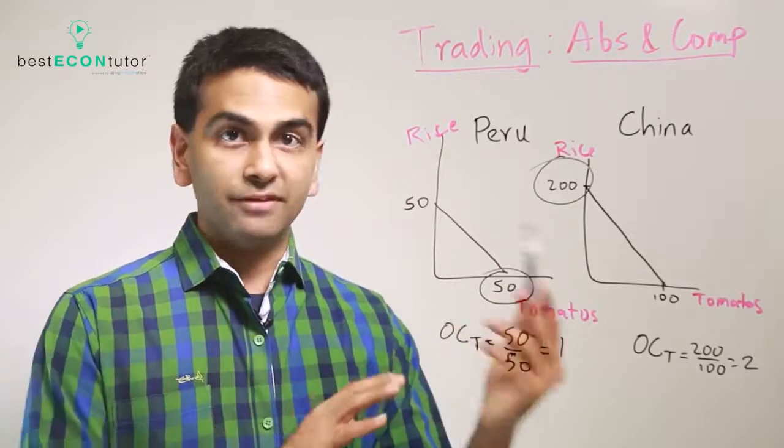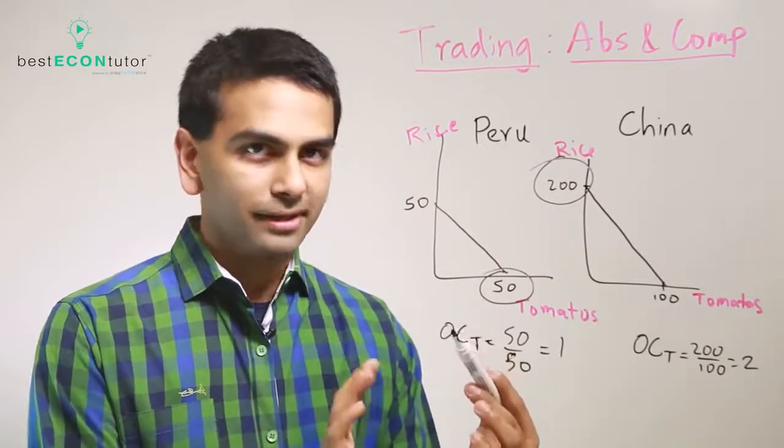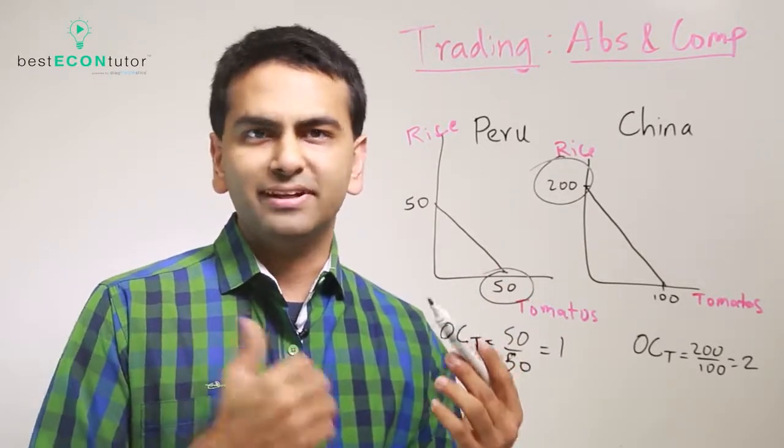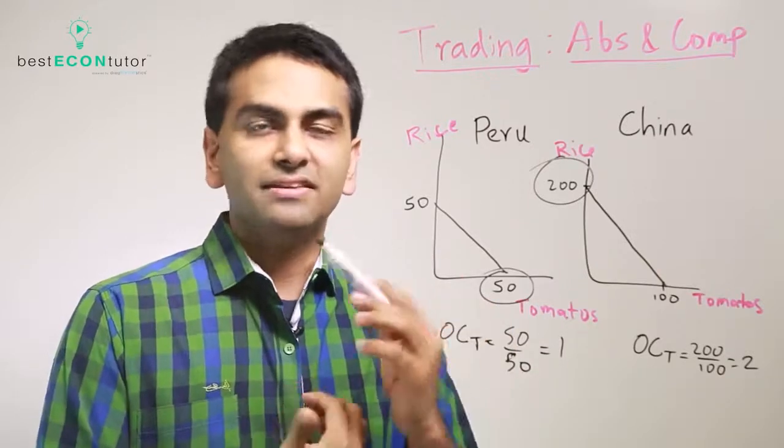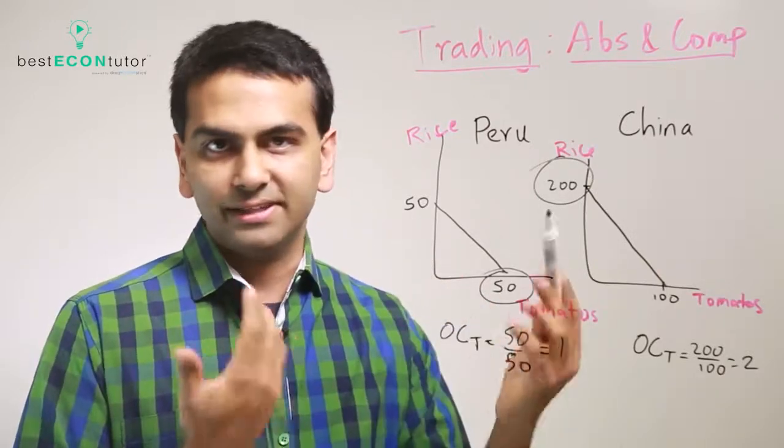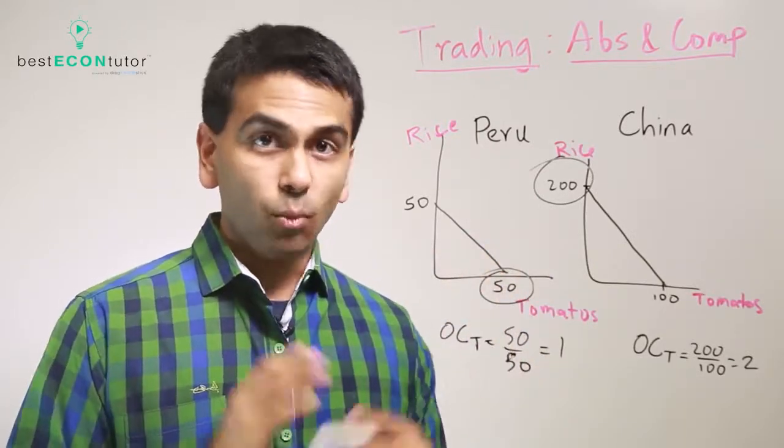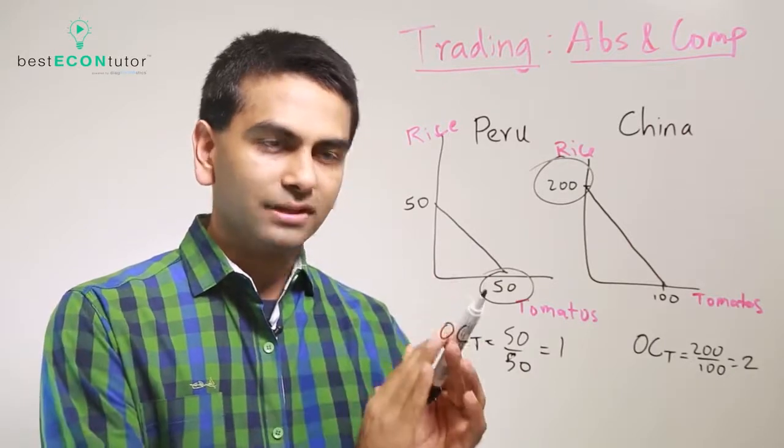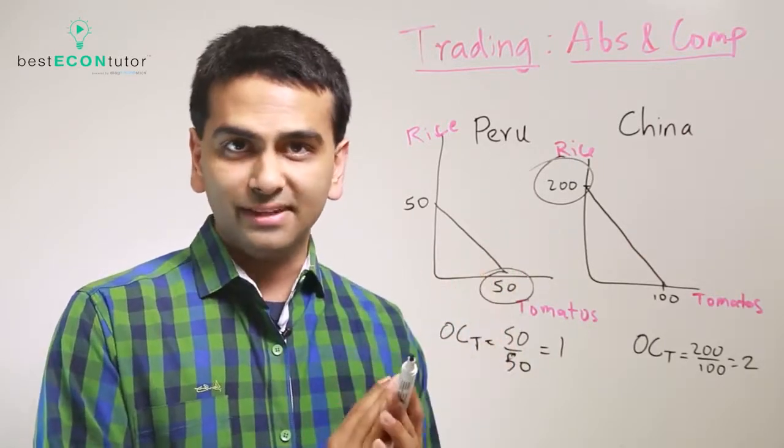So no matter what, if you have the lower opportunity cost for one of the goods, since the other opportunity cost is the reciprocal anyways, then you're going to be the higher opportunity cost for the other good. So that's why one country will specialize in one good and the other will specialize in the other.